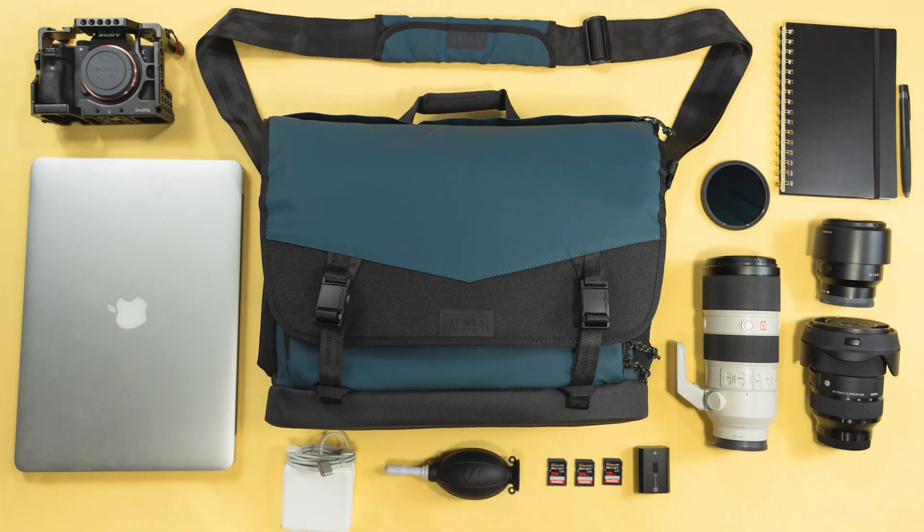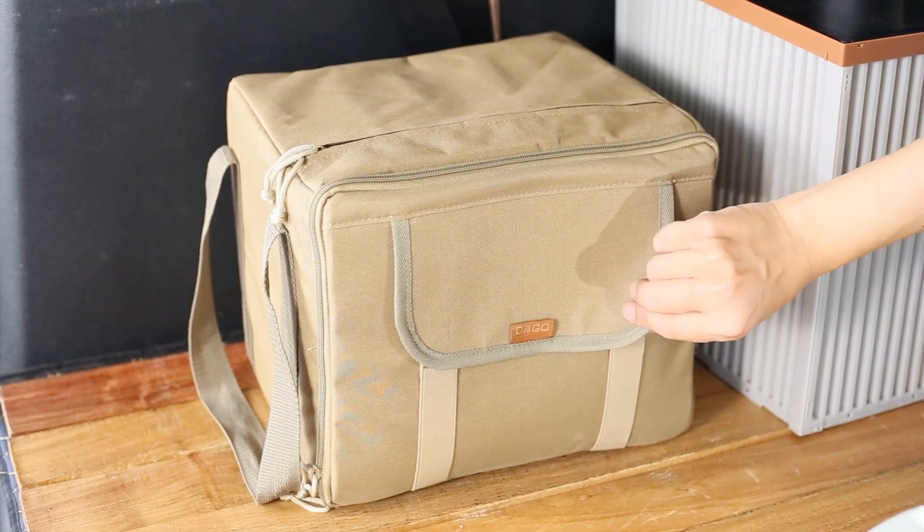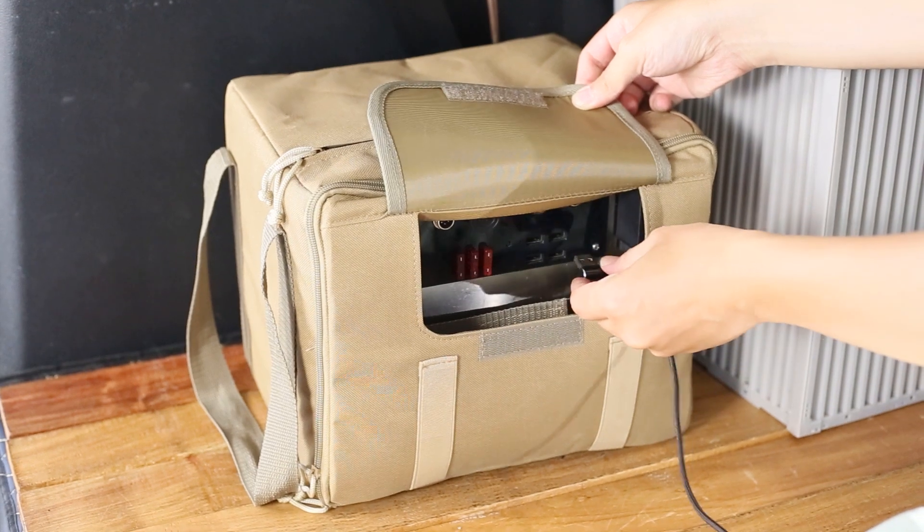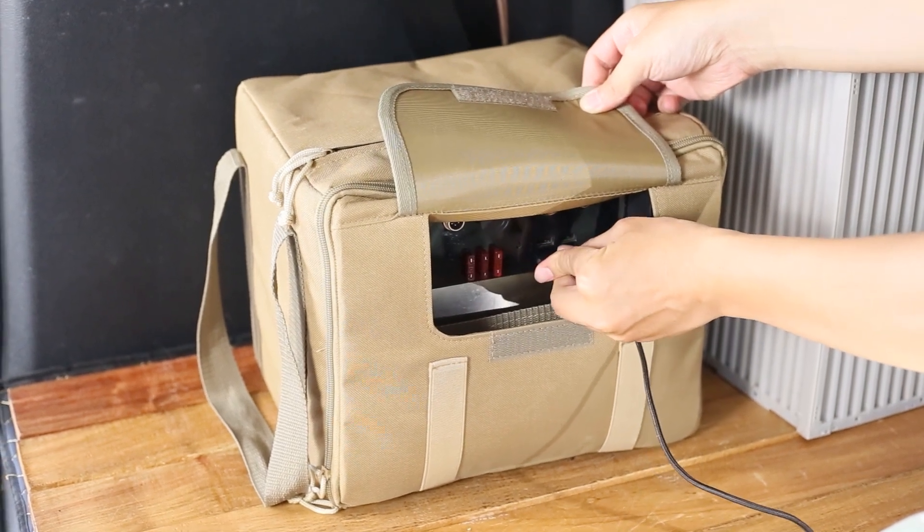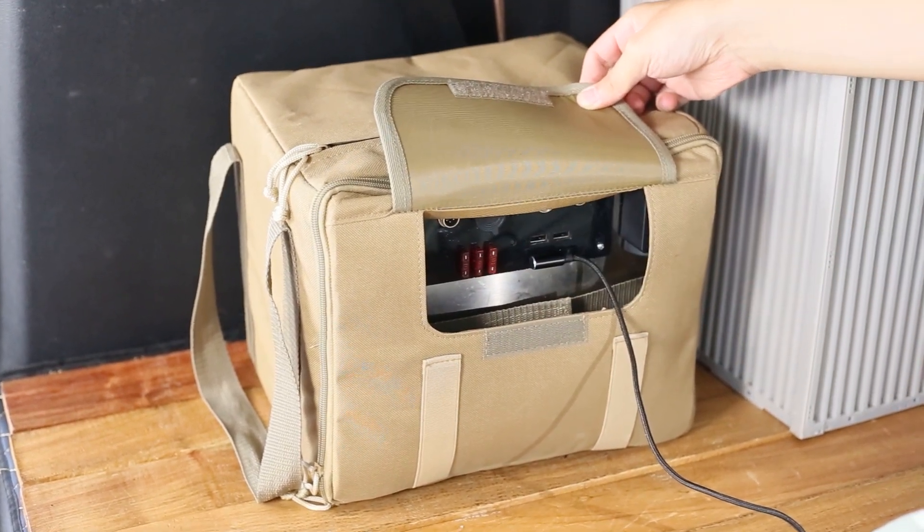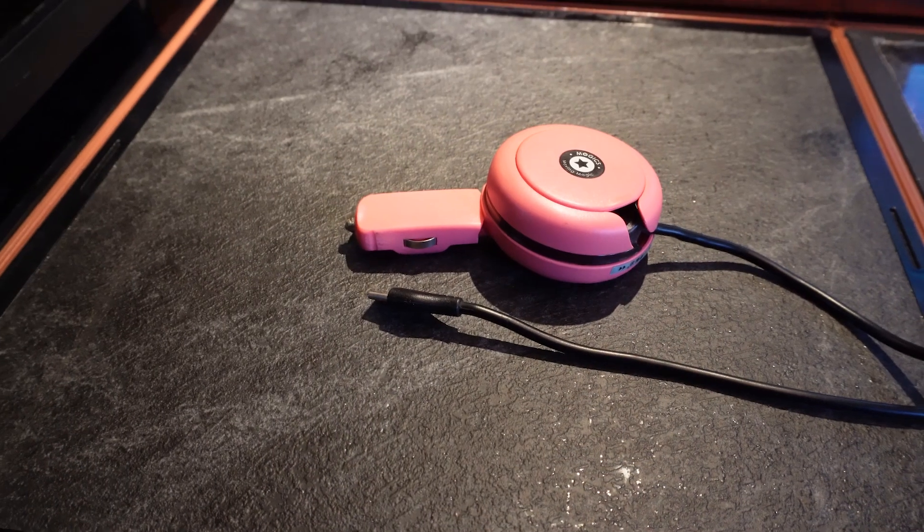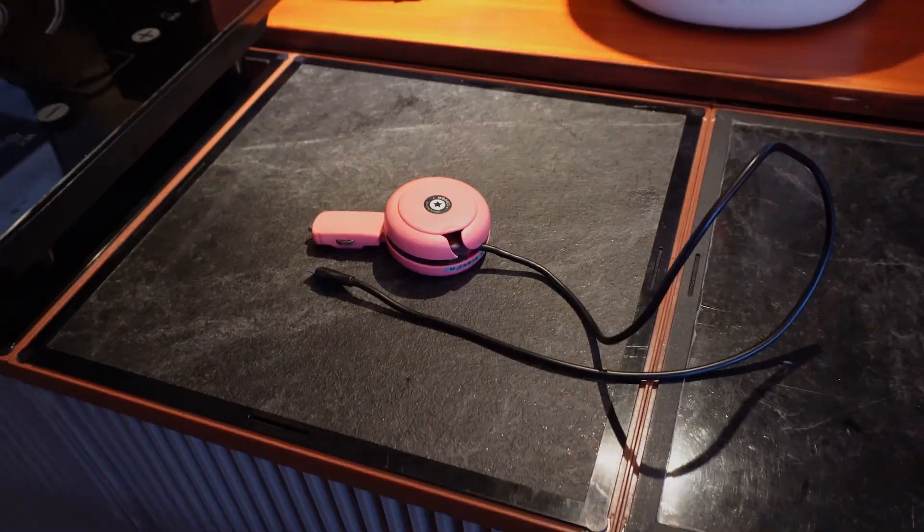Modern van life also heavily relies on a range of electronic devices. Whether it's smartphones, tablets, laptops, or various photography gear, all require a stable power supply. To support these needs, the battery system includes multiple USB-A output ports, allowing for fast charging of several devices simultaneously and relieving the stress of battery anxiety. For higher power devices like laptops, a cigarette lighter to Type-C adapter can be used to provide reliable charging.